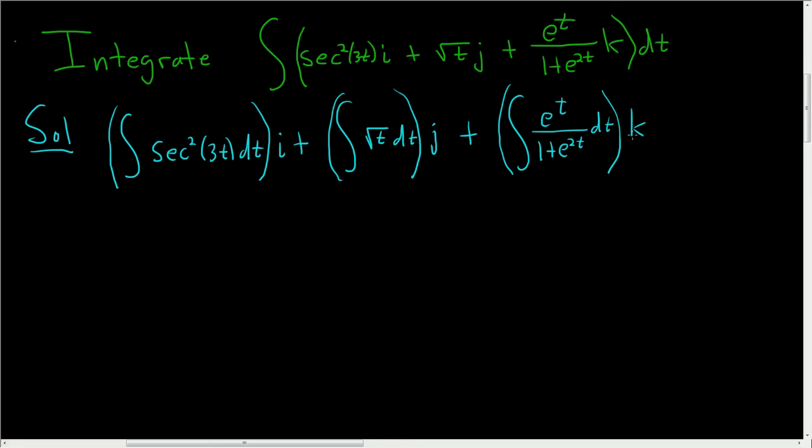And then we'll just integrate each piece separately. So for the first piece, we can make a substitution. We can let u be equal to 3t. So then du is equal to 3 dt. And we don't have a 3 here in the integrand, so we'll divide both sides by 3. And so du over 3 is equal to dt.